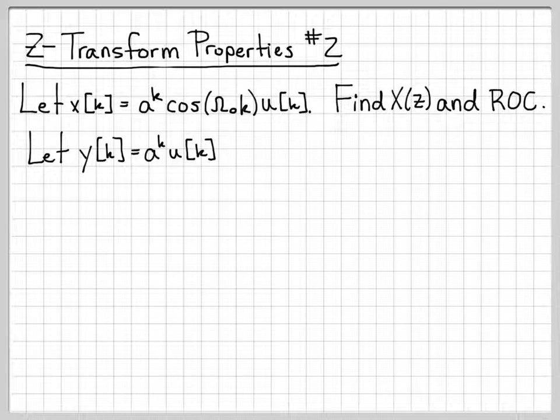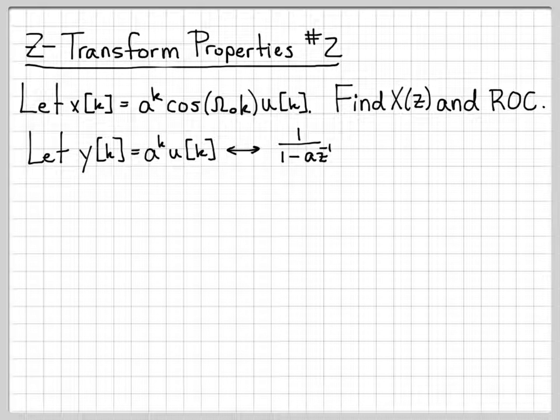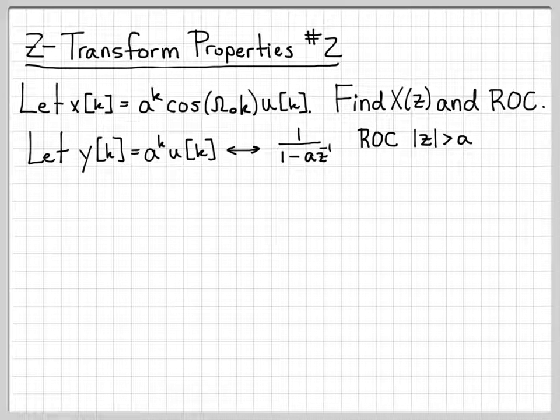We could just go to our table, and we know that this has a Z-transform of 1/(1 - az^(-1)). The region of convergence for this right-sided signal would be all the points in the complex plane whose magnitude |z| is greater than a.